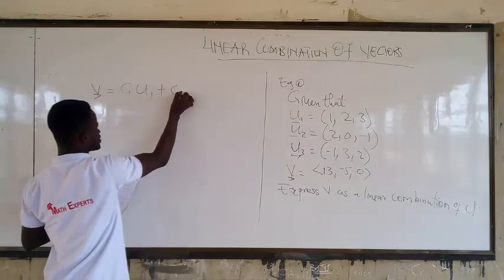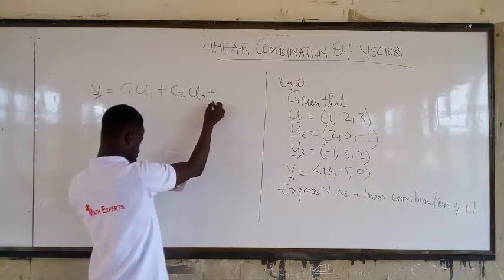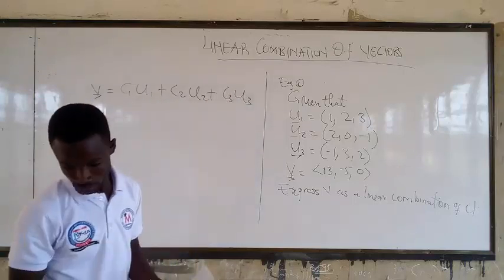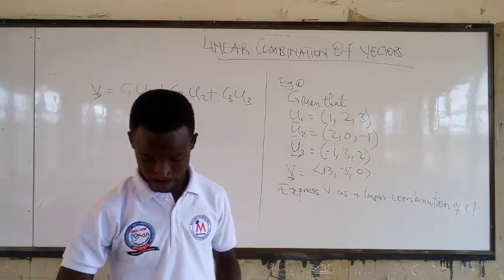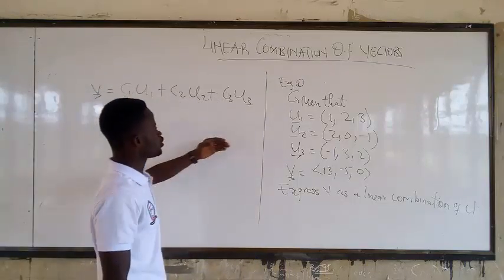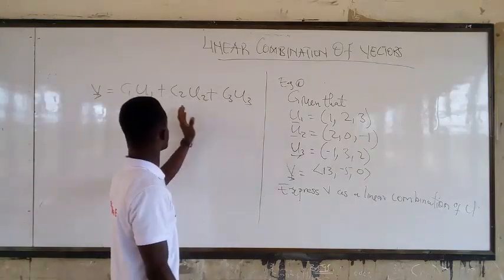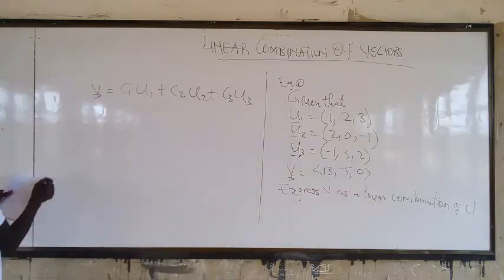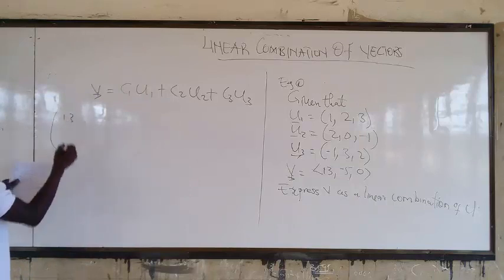C1, U1, plus C2, U2, plus C3, U3. Alright. Now, here you know your U, and you know your V.